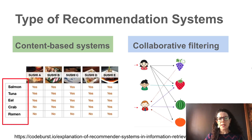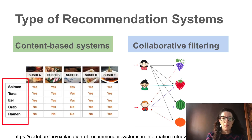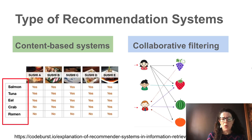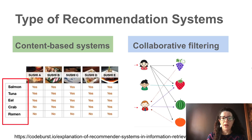There are basically two types of recommendation systems: content-based systems and collaborative filtering. Content-based systems are based mostly on the content of the item you want to recommend. For example, consider items like sushi — suppose we have five types of sushi with features describing their ingredients.